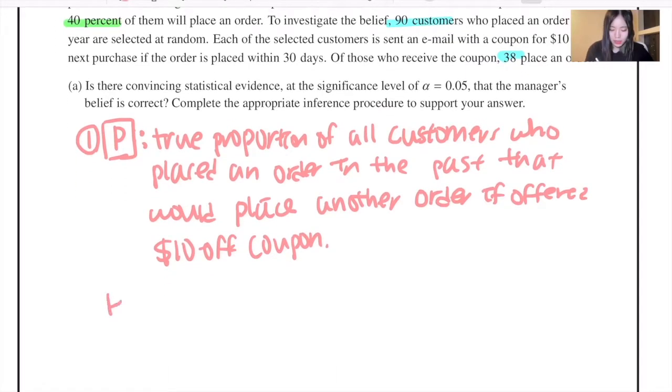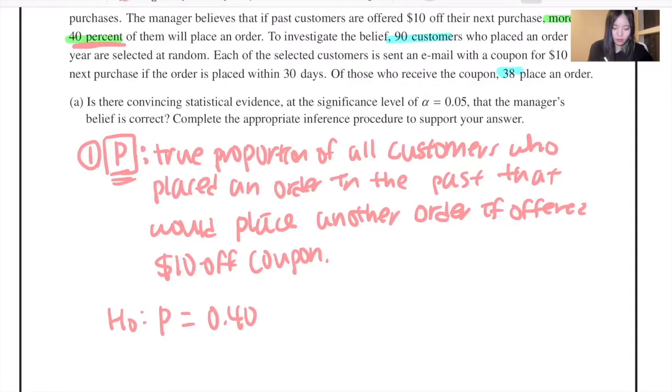And the null hypothesis here would be that p, this proportion, is equal to 0.40, 40% as mentioned. And the alternative hypothesis would be the belief of the manager. So he believes that it is more than 40%, so this would be the alternative hypothesis.